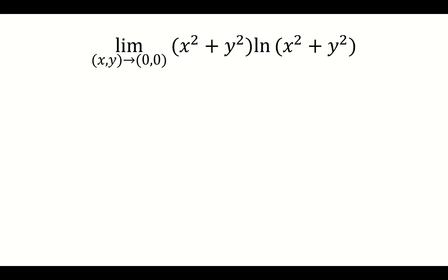This is a good limit to use polar coordinates. So x and y approaching (0,0) will turn into r approaching zero from the right because r is a radius and it can never be negative. x²+y² is r², so you have r²ln(r²).